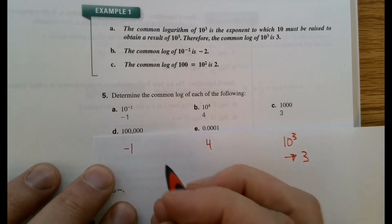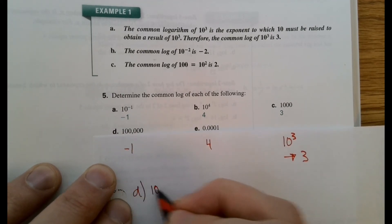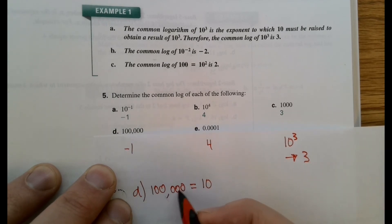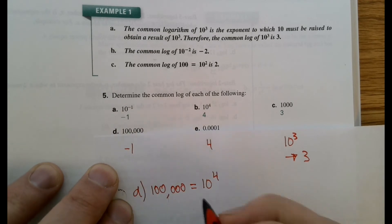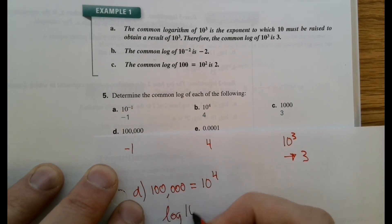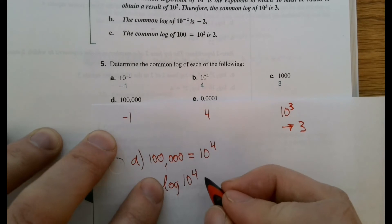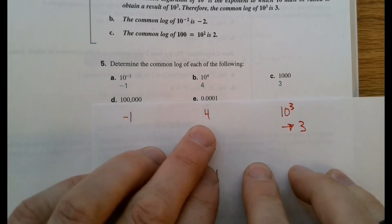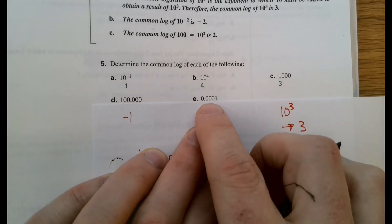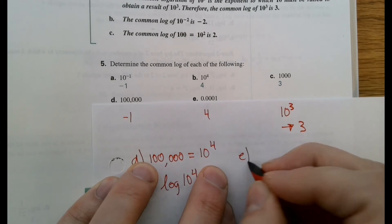100,000? So again, we know how to write that as a base of 10 with an exponent. We just count how many zeros are there. There's 4. This would be 10 to the 4. So the common log of that would be 10 to the 4. Tricky one, right? 0.001. Don't be tricked. You know how to write this in scientific notation.